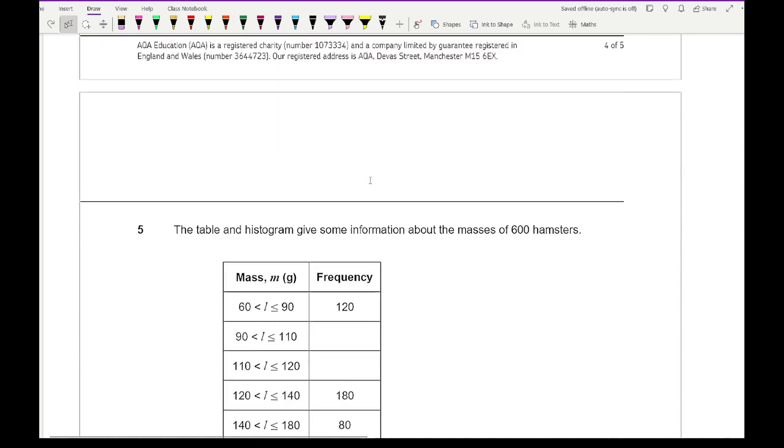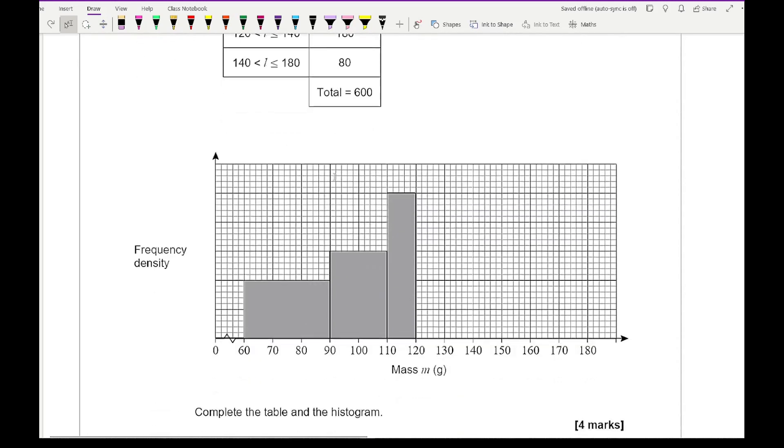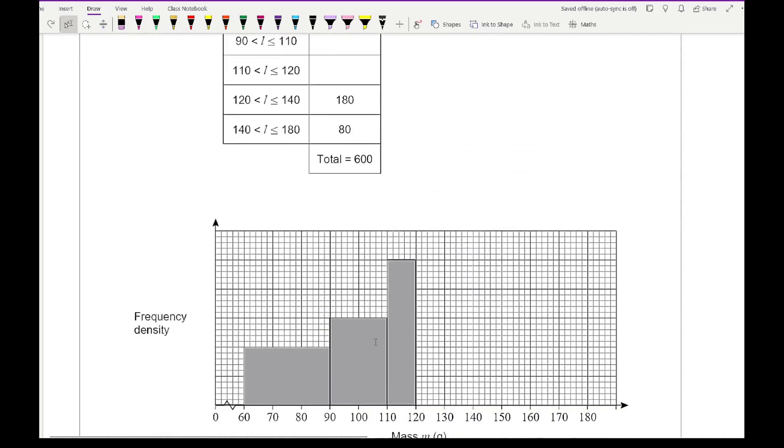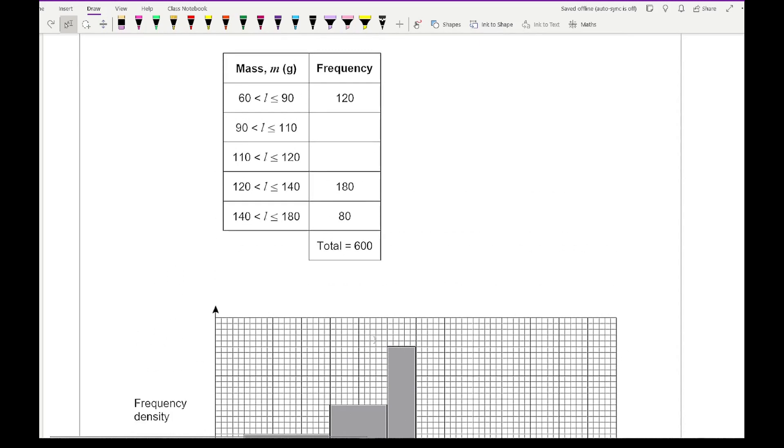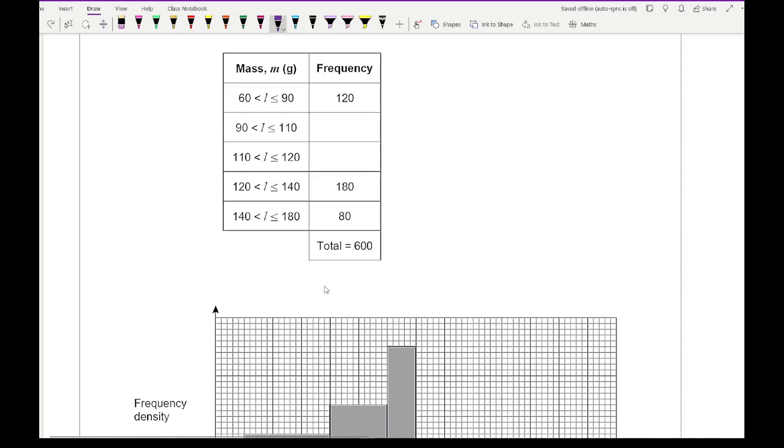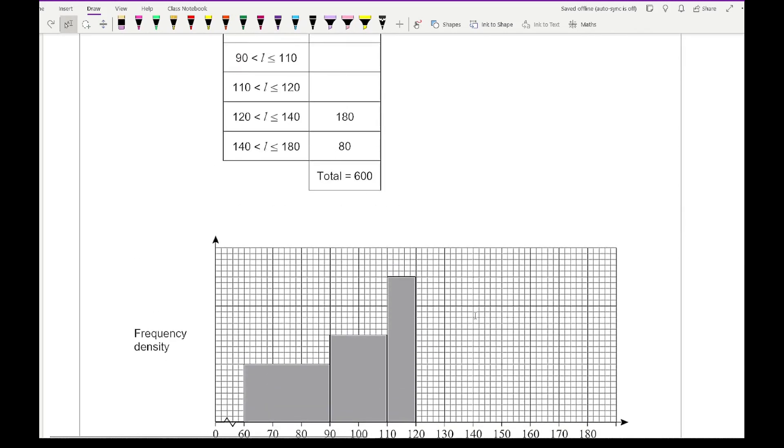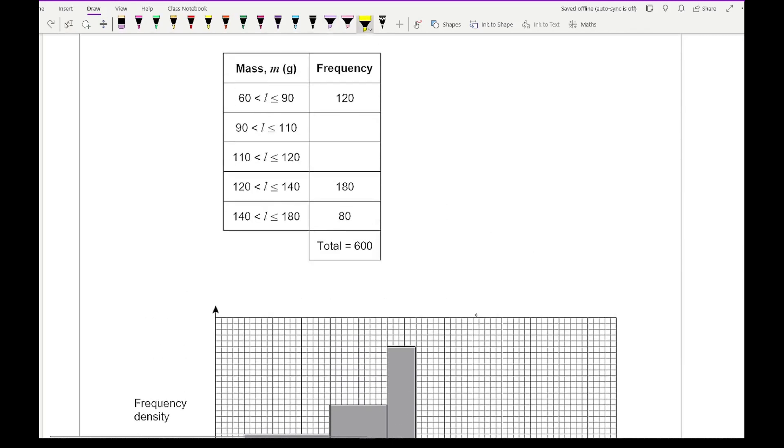Moving on to question 5, the table and the histogram give information about the masses of 600 hamsters. We need to complete the table and the histogram. For this we need to find out what the frequencies are and we also need to label and plot the remaining two columns. Looking at the bit that is complete, I know the class width is going to be 30, and then 20, and 10, 20, and 40.